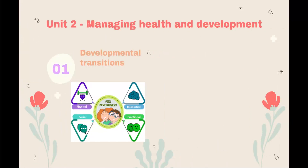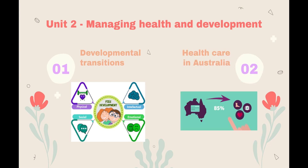In Unit 2, we look at developmental transitions of the whole lifespan — so that's from conception to death — and we look at the different milestones of physical, intellectual, social and emotional development. Then we look at healthcare in Australia, covering Medicare, the PBS system and also private health insurance and how that's laid out in Australia.